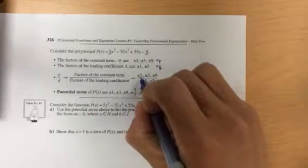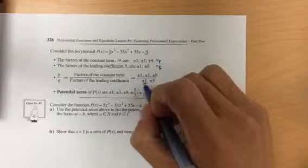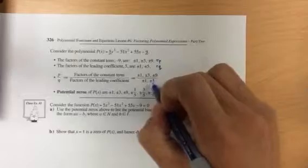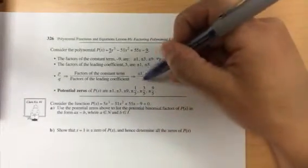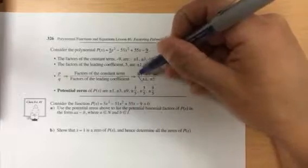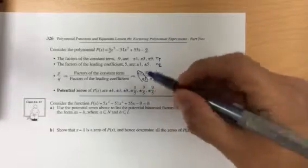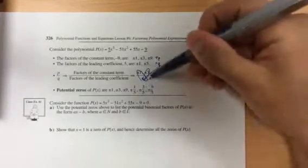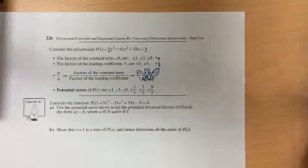And so plus or minus 1, plus or minus 3, plus or minus 9 over q, which is plus or minus 1, plus or minus 5. And so then the potential zeros, if we add up all these terms or the combinations of terms, we have 1 and 1 or 1 and negative 1, 1 and 3, 1 and 9, we have 3 and 5, and we also have 9 over 5.